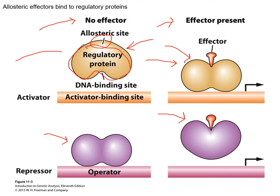An activator in its unbound state floats around in the cytoplasm of prokaryotes. When an effector is present, it binds to the DNA, recruits the transcription machinery, and allows that gene to be turned on. Repressors are opposite: when there are no effectors present, the repressor is bound to the DNA at the operator and prevents transcription. When an effector is present and the repressor senses its environment, the effector binds to the allosteric site, causes a conformational change, removes the repressor from the operator, and allows transcription to proceed.